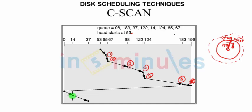Now from the 0 side going towards 200 again in terms of rotation, we have seventh that is 14, eighth that is 37. So this is C-SCAN.